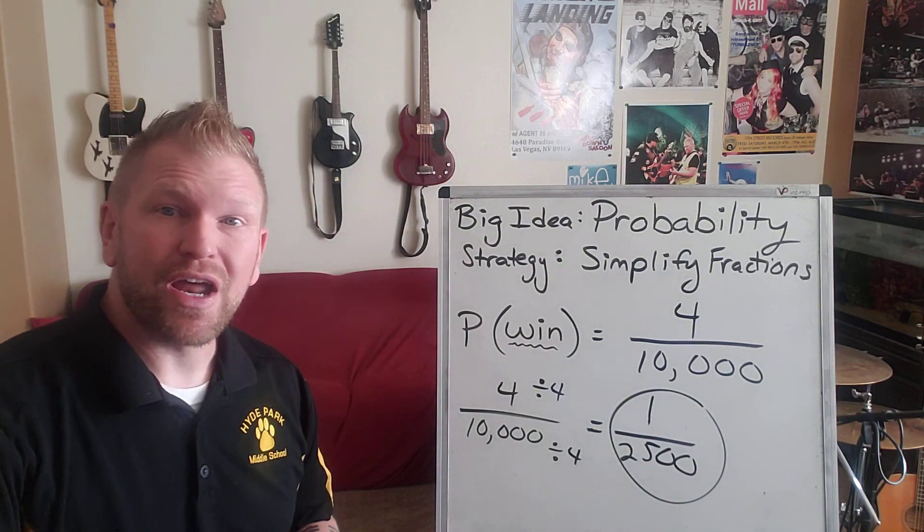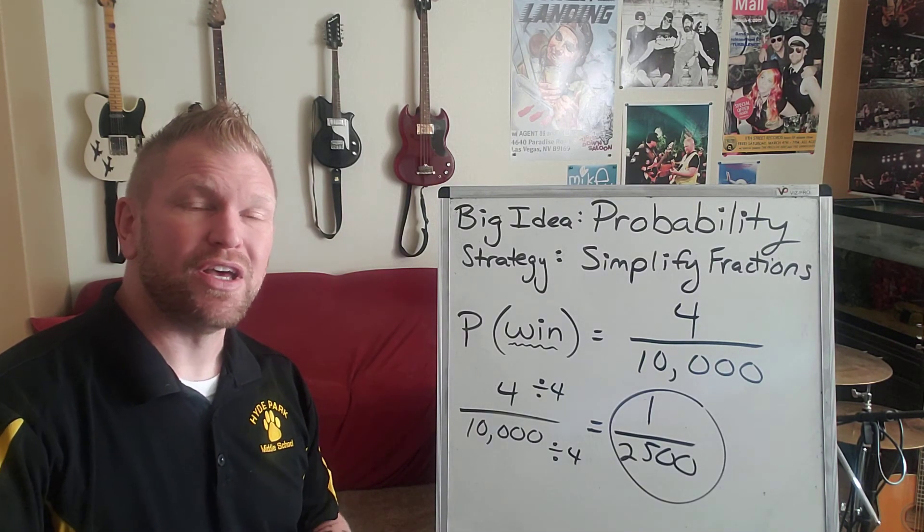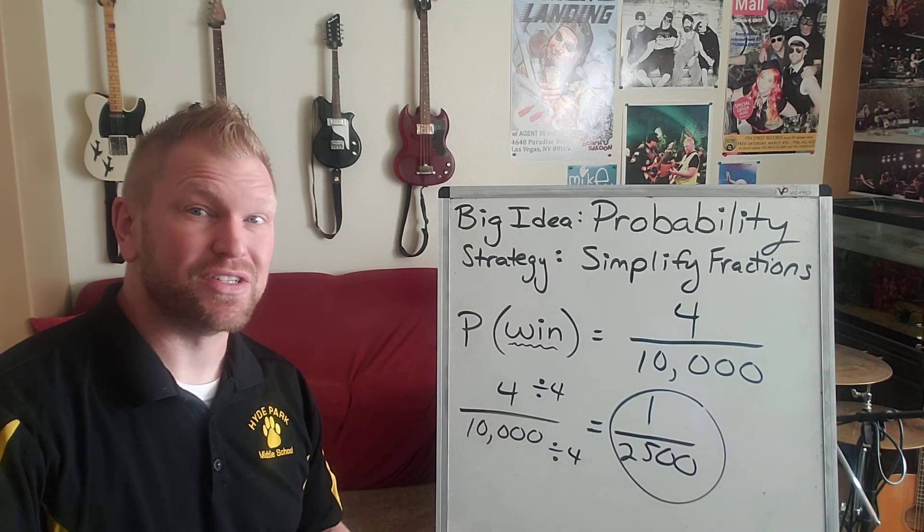All right, so there you go. Knowing how to do probability, but then also how to simplify your fractions to get them into simplest form, especially when you have to pick out the right answer that is in simplest form.